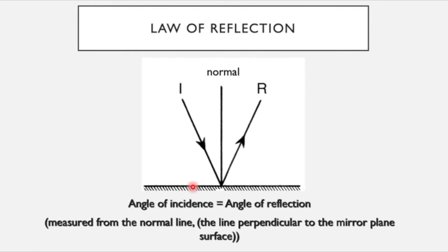So here this is our ray of incidence, so it's I, and this is our ray of reflection, R. So in between the ray of incidence and the normal is the angle of incidence, and in between the ray of reflection and the normal is the angle of reflection. And this angle here, the angle of incidence, is equal to the angle of reflection.